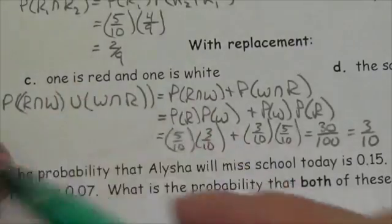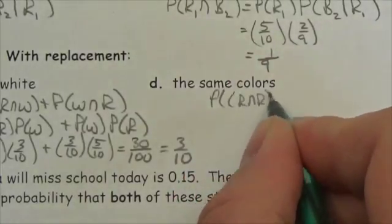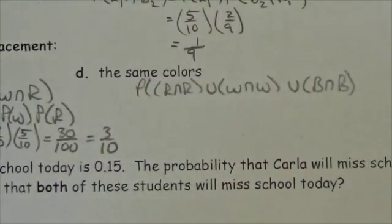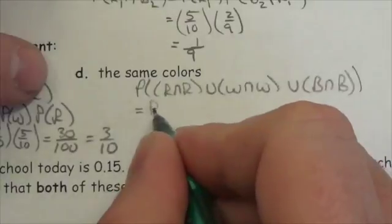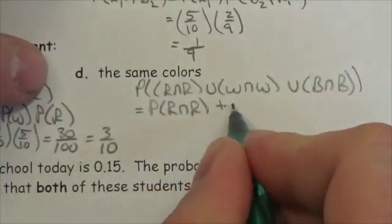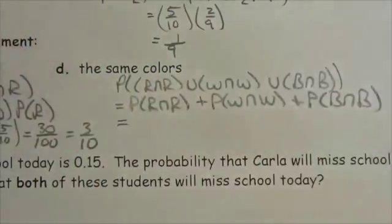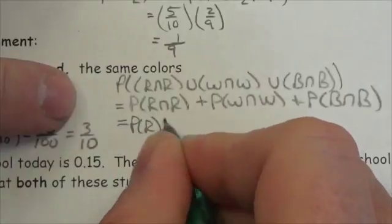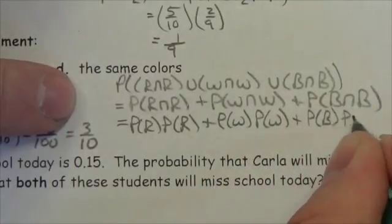Now let's look at the probability that both marbles are the same color. This is the probability of red and red, or white and white, or blue and blue. These can't happen together, so we have 'or' situations — they're mutually exclusive. So it's the probability of red-and-red plus the probability of white-and-white plus the probability of blue-and-blue. Because we're putting the marbles back, the individual 'and' events are independent: probability of red times probability of red, plus probability of white times probability of white, plus probability of blue times probability of blue.